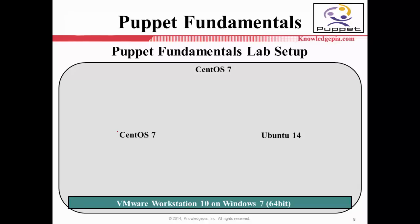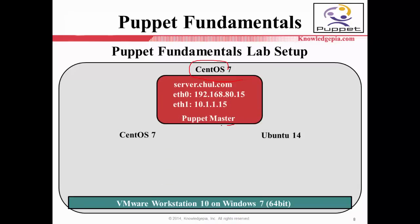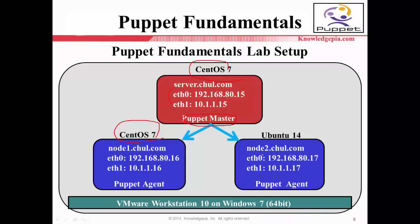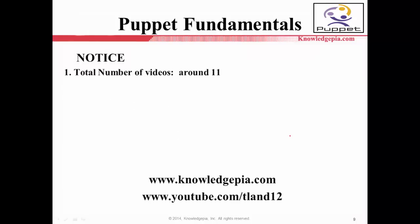For this course, I will use this kind of lab setup. Especially CentOS — this one will be the Puppet Master, with hostname server.chartdack and a corresponding IP address. If I successfully configure and start Puppet Master, then I will prepare 4 Puppet Agents as well. One will use CentOS 7 as the operating system, and another Puppet Agent will use Ubuntu 14.